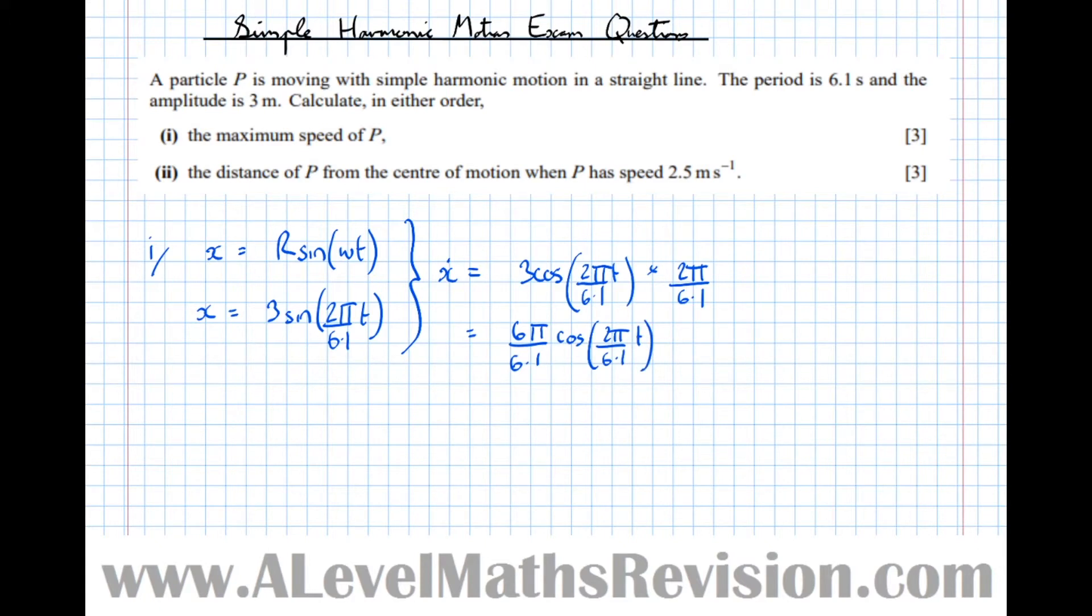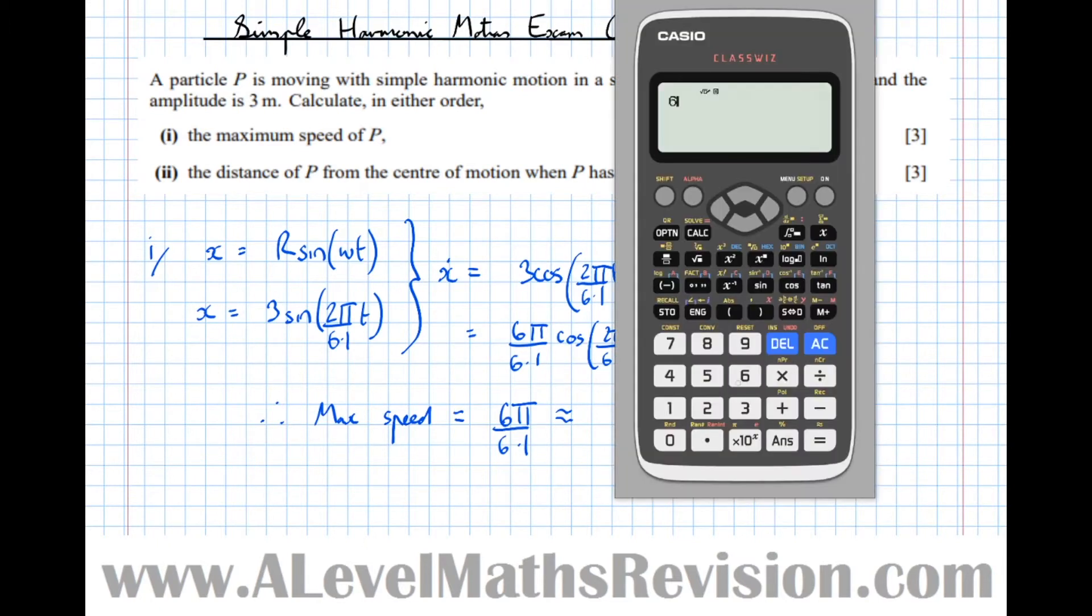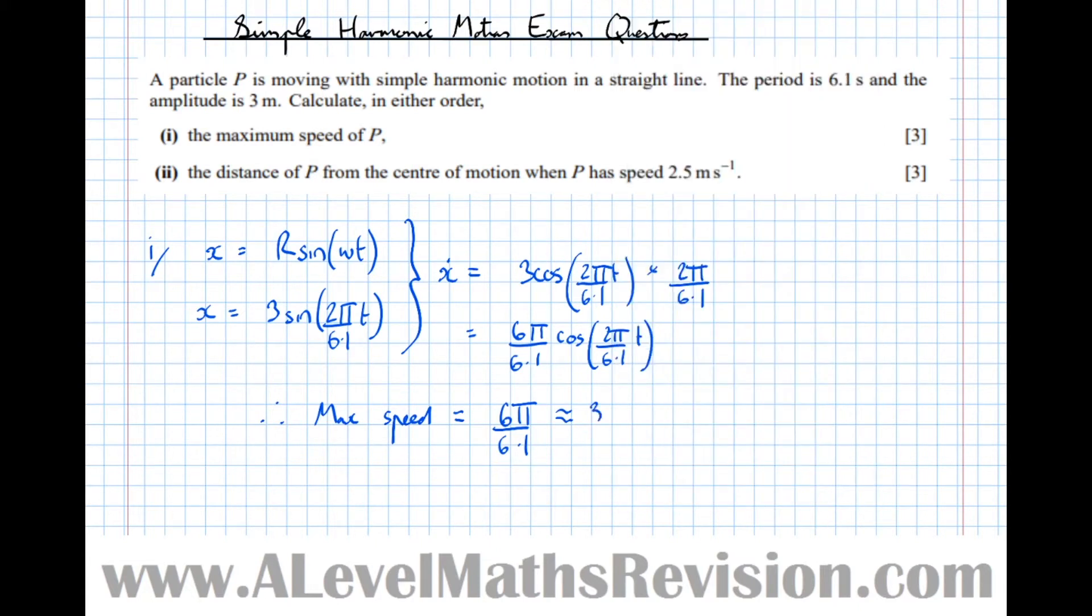This equals 6 pi over 6.1 cos of 2 pi over 6.1 t. The maximum of that is 6 pi over 6.1 because the maximum of cos is 1, therefore max speed equals 6 pi over 6.1 which is approximately equal to 3.09 metres per second.